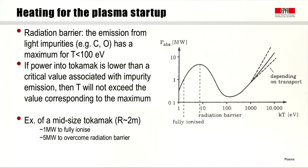First, I'd like to remind ourselves that we need power to initiate the plasma discharge, that is, to ionize the gas that we inject into the tokamak. On the other hand, what may be a little bit less intuitive is that we also need a certain power level to overcome what's called the radiation barrier.